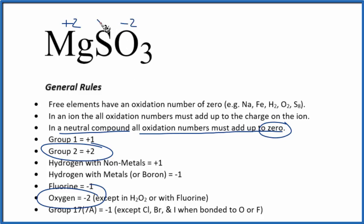And we'll say sulfur is x. We don't know that. So now we can set up an equation. We could say that 2 plus x, and we have 3 oxygen, so 3 times minus 2 is minus 6, has to equal 0, because it's a neutral compound.